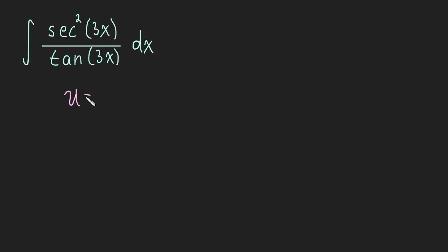So we're going to let u equal tan of 3x, and then du is going to be... Now we need to do a chain rule here. So derivative of the outside, that's secant squared. Repeat the inside, that's 3x. Times by the derivative of the inside, the derivative of 3x is simply 3, and then we can't forget our dx.